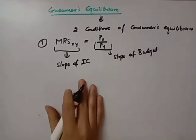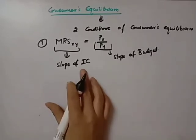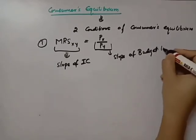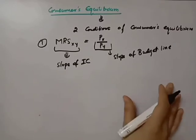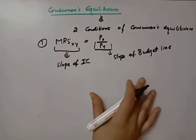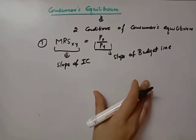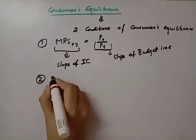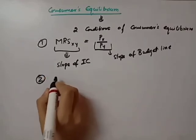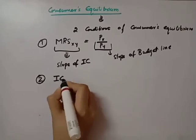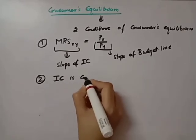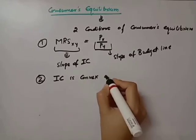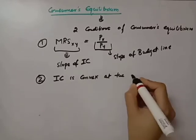The point at which the slope of the indifference curve is equal to the slope of the budget line is called the consumer's equilibrium. The second condition is that at the point of equilibrium, the indifference curve must be convex to the origin.